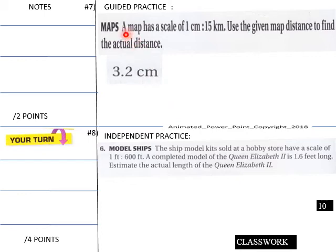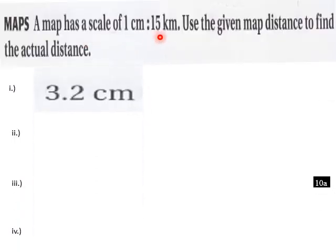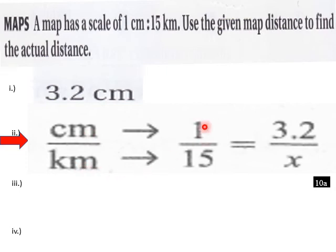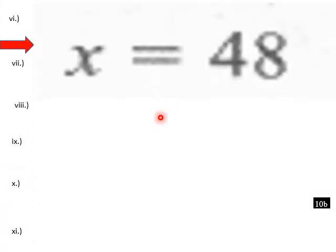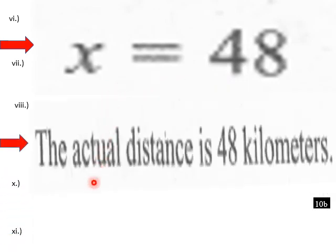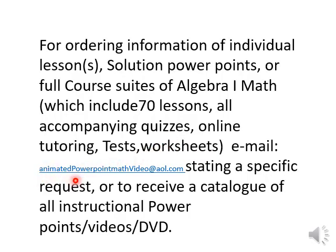Now for the guided practice: a map has a scale of one centimeter equals 15 kilometers. Use the given map distance of 3.2 centimeters to find the actual distance. Set up the proportion: centimeters over kilometers gives us 1 over 15 equals 3.2 over x. Cross multiply: x equals 15 times 3.2, which is 48. So 3.2 centimeters represents a distance of 48 kilometers. That's your lesson for today — animated PowerPoint math video at all.com for questions or course materials. Thank you very much.